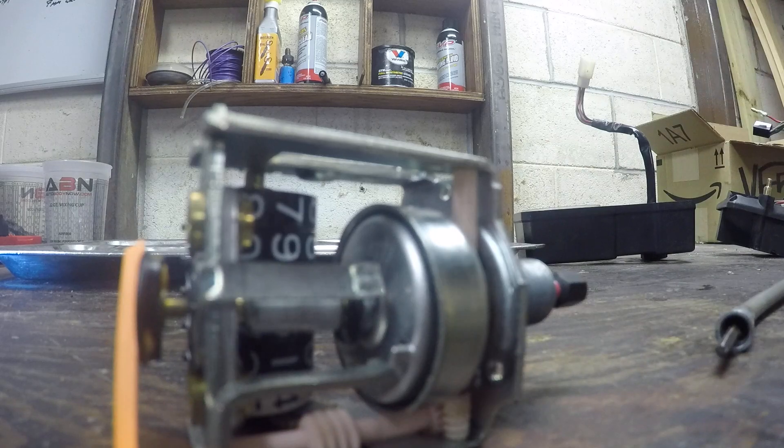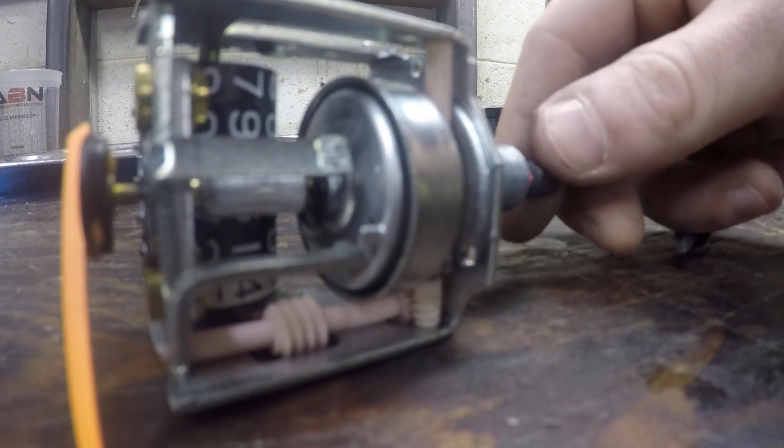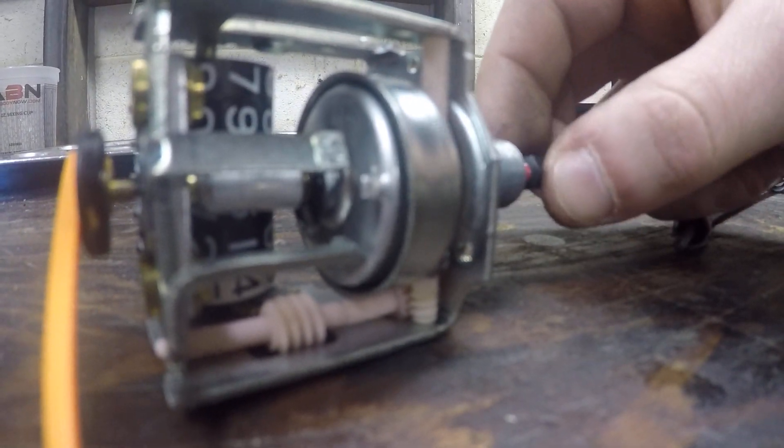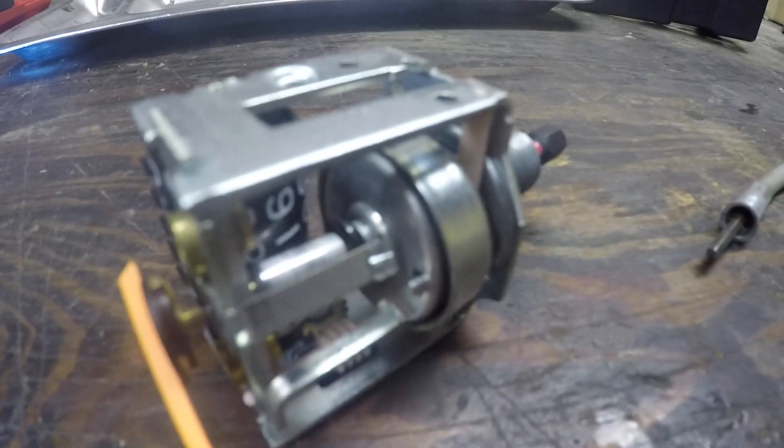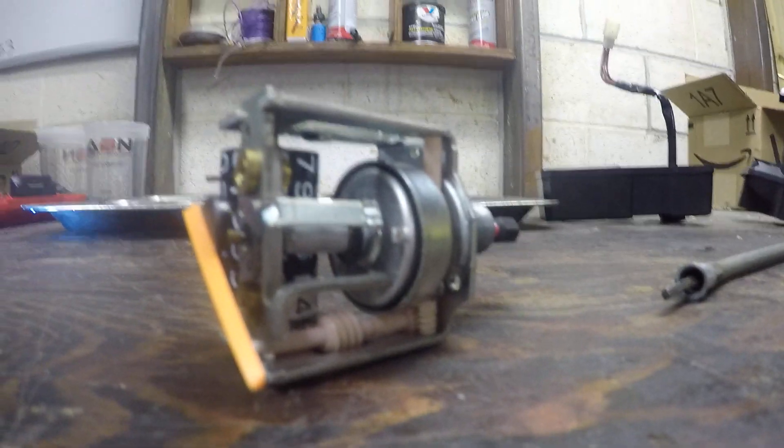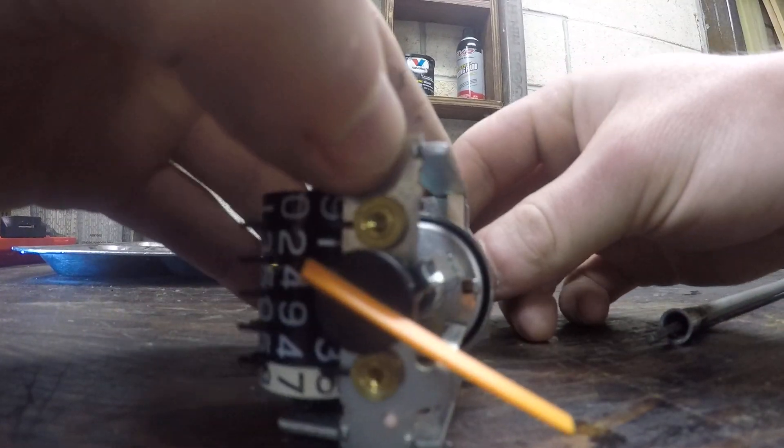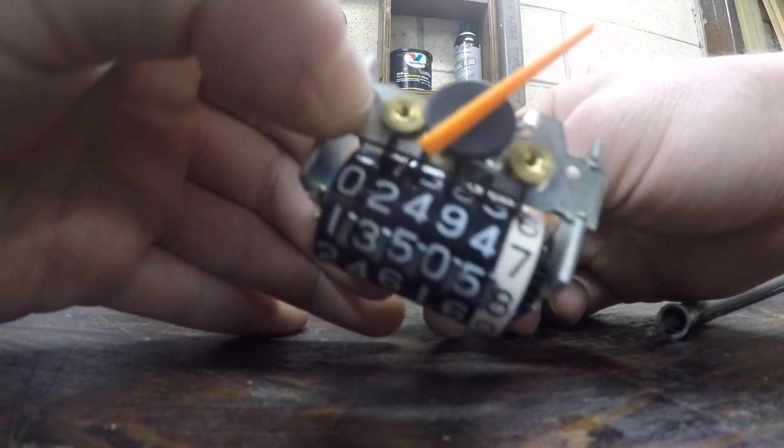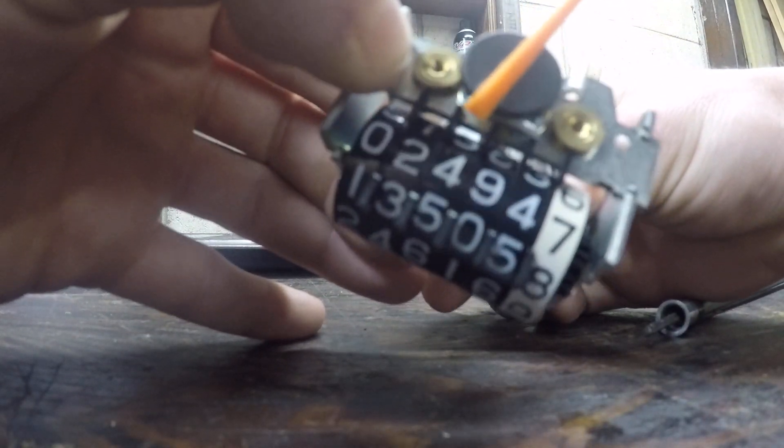However, it creates eddy currents inside of it, and so given enough time the inside one will match its speed. But it's held in place by a small spring inside of there, that black coiled up spring. So that's going to provide it some resistance.